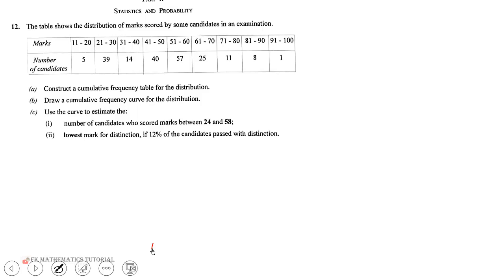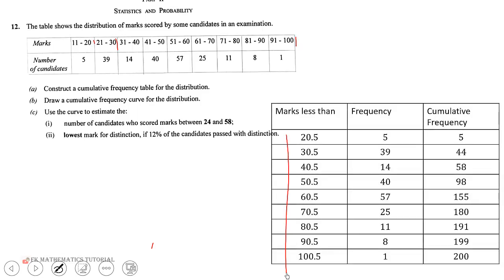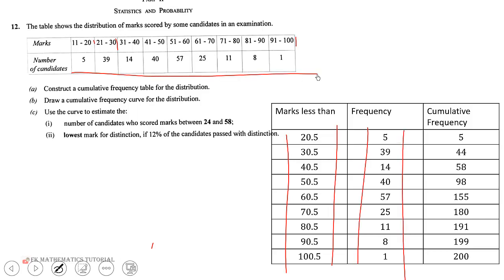We are going to construct a cumulative frequency table. We find the upper class boundaries: 20.5, 30.5, up to 100.5. We pick marks less than the upper class boundaries. On the cumulative frequency column, we add frequencies up to the current class. So up to the first class we have 5, then 5 plus 39 is 44, then 14 plus 44 is 58, then 40 plus 58 is 98. We repeat that up to 200, which should equal the total frequency. That is part A.